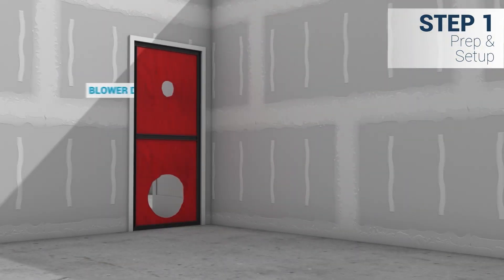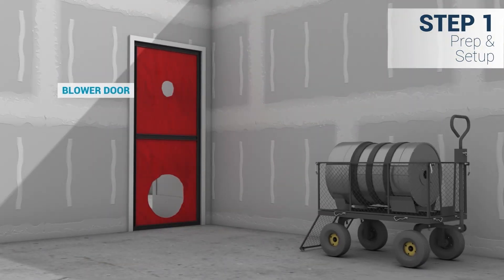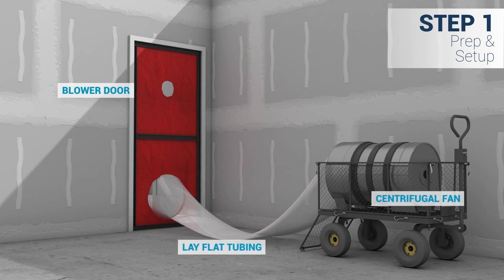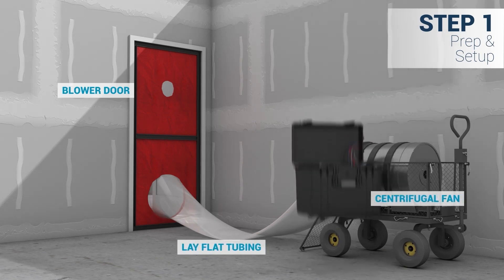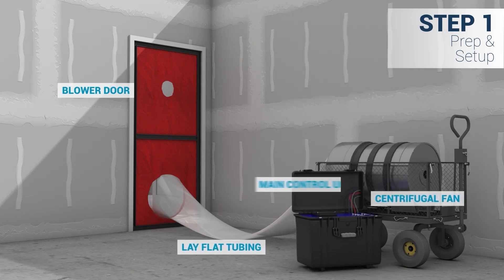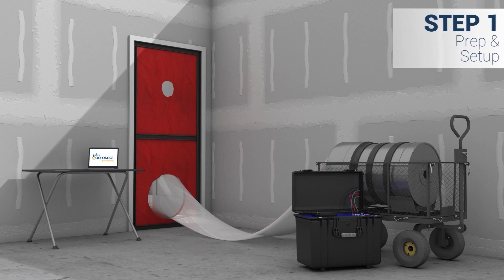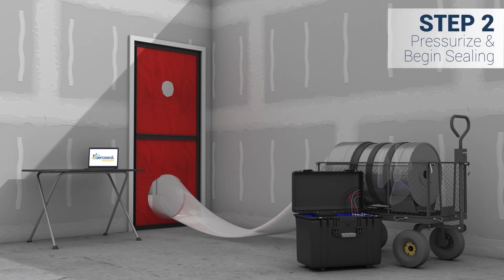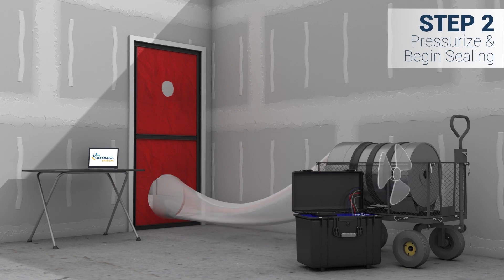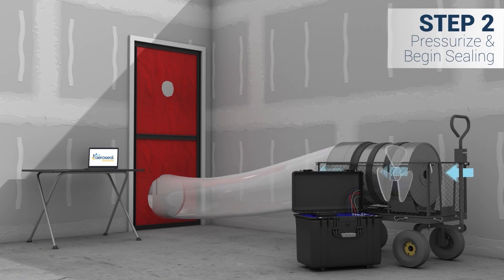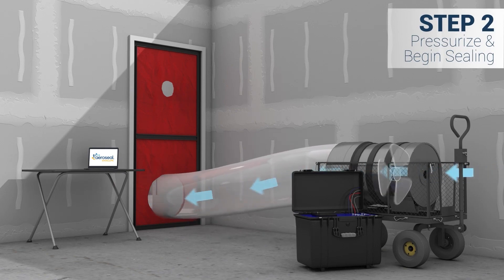Next, the blower door is installed, connected to a high-powered fan, and linked to the main control unit. A laptop is then set up to control the process and monitor progress. The target air changes per hour, or ACH50 setting, is entered into the software.